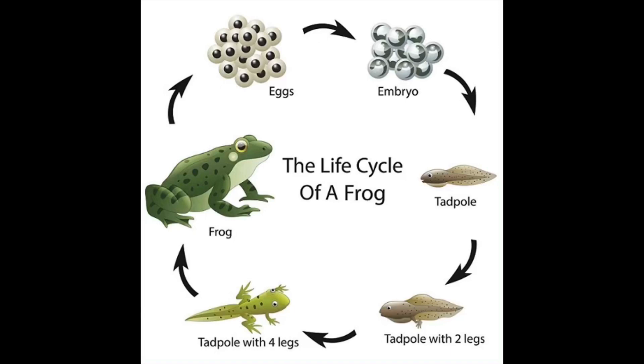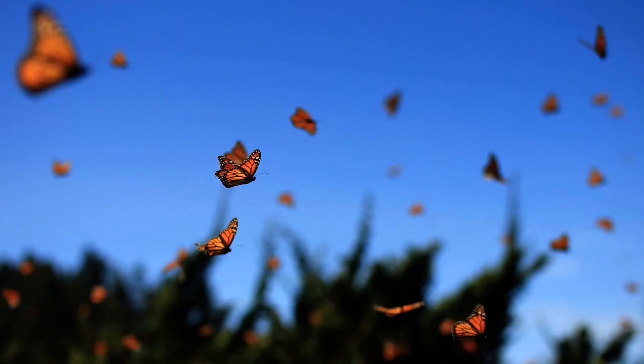There are about 25,000 different kinds of butterflies in the world. Butterflies vary in size from about one eighth of an inch to almost 12 inches. The largest butterfly in the world is the Queen Alexandra bird wing, with a wingspan of 12 inches wide. It lives in the rainforests of Papua New Guinea.